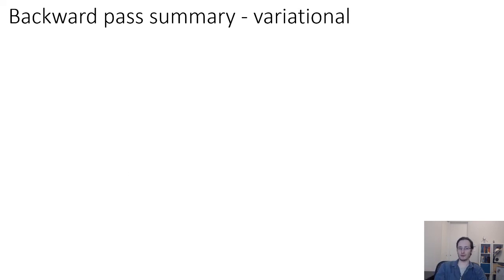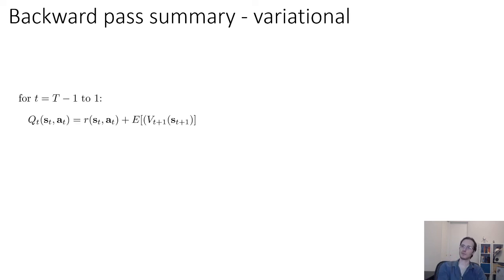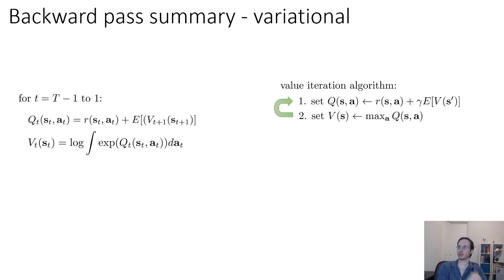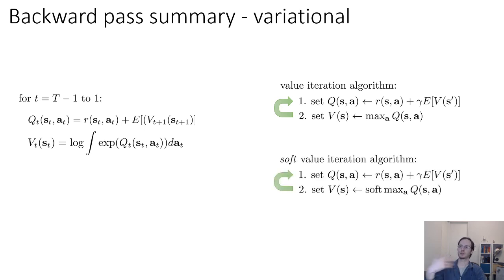This gives us a dynamic programming solution summarized as a backward pass from the last time step to the beginning: set the Q function to R plus the expected value of the next V (regular Bellman backup), set V to the soft max (log integral of exponentiated Q), and repeat these backups. This is a soft value iteration algorithm where everything is exactly the same as regular value iteration, except V is a soft max rather than a hard max, and the final policy is the exponential of Q minus V.